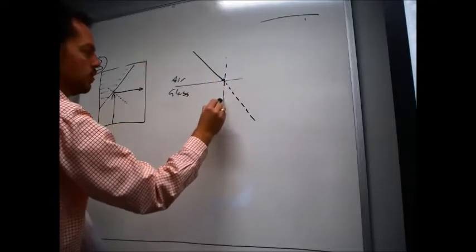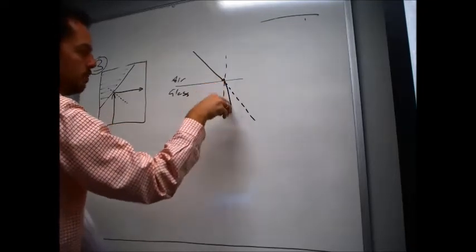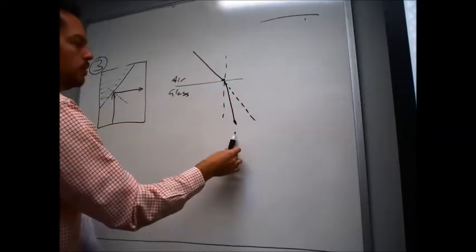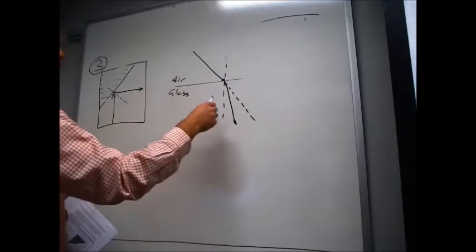It would be, in this case, going into a denser medium, so it bends towards the normal. You can see light enters the medium, but its path gets bent. So that's what refraction is.